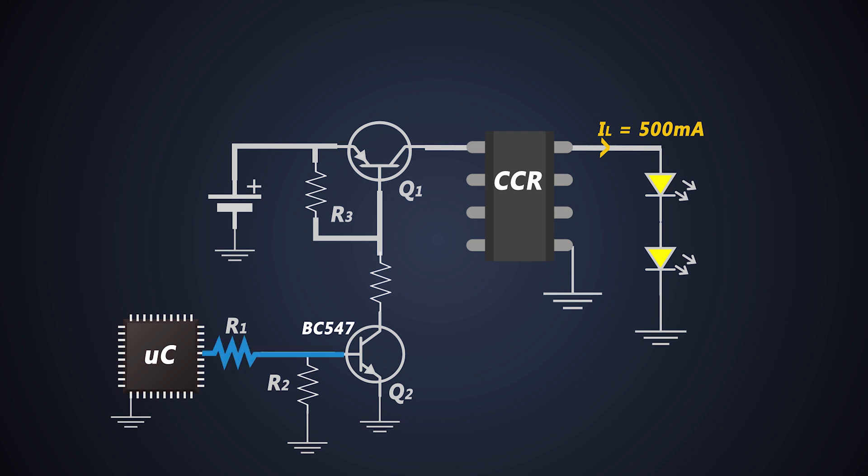So when we turn on the transistor Q2, the base of the Q1 gets grounded through the resistor R3 and Q2 which turns on the Q1 transistor. Once the transistor Q1 is turned on, the current flows to the circuit and circuit completes.